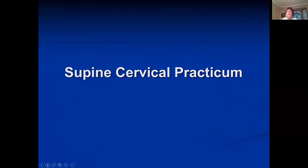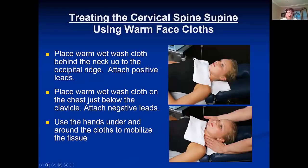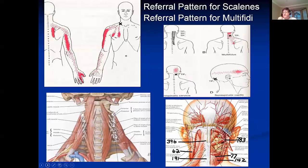The supine cervical practicum is for people who have that tight spot and pain at the base of their skull. We put a washcloth behind the head from the neck up to the occipital ridge with positive leads there, and a warm wet washcloth on the chest just below the clavicle. Between those two contacts, you can treat all the muscles and nerves from the scalenes and longus coli. If you treat the scalenes and longus coli manually, there are fragile vascular structures — carotid arteries, baroreceptors, the vagus nerve — not a place for enthusiastic force.